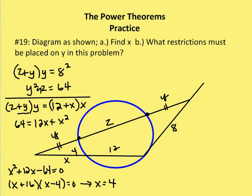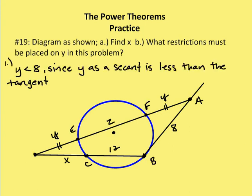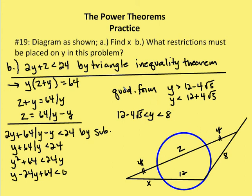Now let's find the restrictions on Y. First restriction: Y needs to be less than 8, since Y as a secant segment must be shorter in distance than the tangent segment — so Y has to be less than AB.